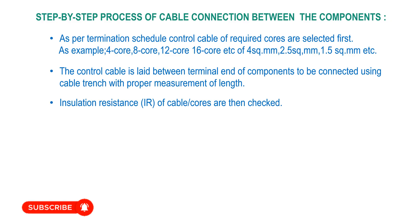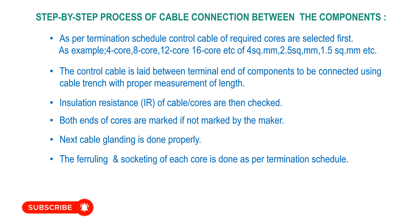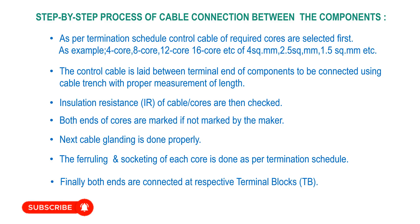The IR of the cable cores is then checked. Both ends of the cores are marked if not already marked by the manufacturer. Next, cable gland fitting is done properly. Then ferrulling and circuiting of each core is done as per the termination schedule. Finally, both ends are connected at their respective terminal blocks.